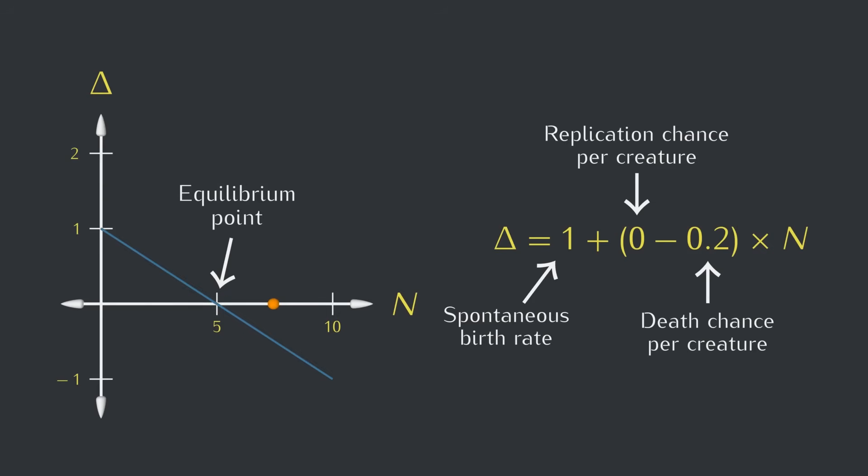And if N goes above 5, we'll expect a negative change, again pushing it back toward equilibrium. To toss another vocabulary term at you, this is known as a stable equilibrium. At this point, the birth and death rates are in balance, and it's stable because if we deviate from this point, the system will tend to go back. It's self-regulating, as if there's a rubber band pulling the system back toward equilibrium whenever it strays away.